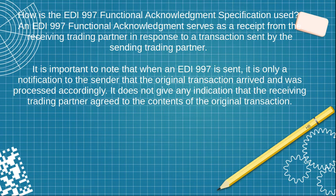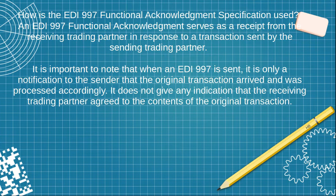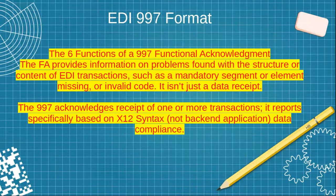Regarding how the EDI 997 functional acknowledgement specification is used: it serves as a receipt of the file for the receiving trading partner in response to a transaction set sent by the sending trading partner. It's important to note that when a 997 is sent, it is only a notification to the sender that the original transaction arrived and was processed. It does not give any indication that the receiving trading partner agreed to the content of the original transaction.